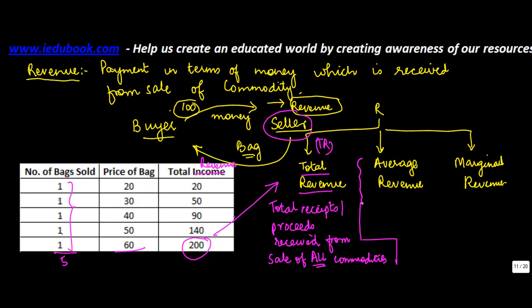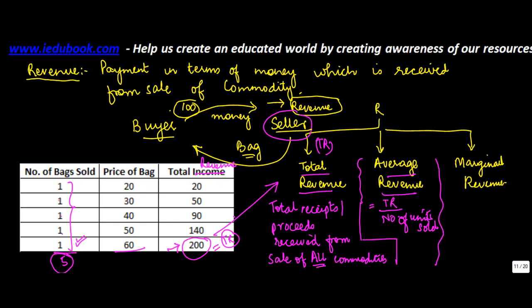When we come to average revenue — on average, how much did the seller earn from the sale of these bags? He earned a total of 200 rupees, which was the total revenue, and he sold 5 bags in all. Average revenue basically means the total revenue divided by number of units sold. In this case, 200 divided by 5 equals 40.